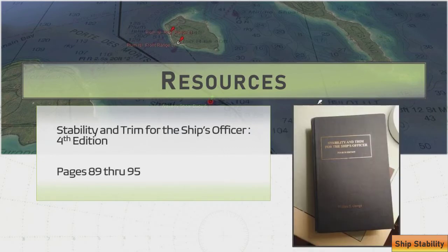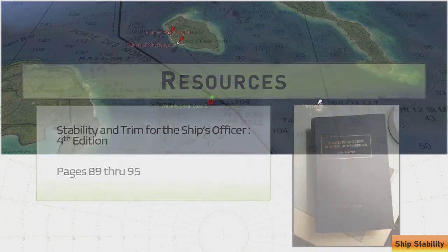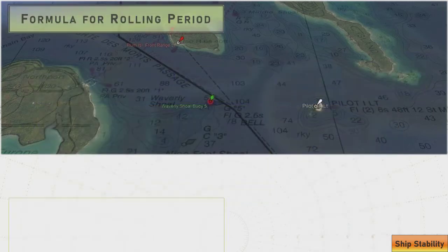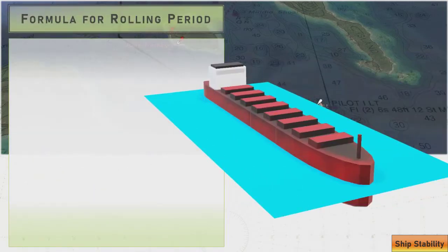We're going to be looking at a book that's probably familiar to you, most of the industry insiders out there. We have a blue hardcover textbook published by Cornell Maritime Press, this is Stability and Trim for the Ship's Officer, fourth edition. We're going to be specifically looking at pages 89 through 95 for our particular stability topic here, which is the relationship between the vessel's metacentric height or GM and rolling period.